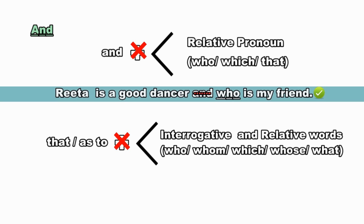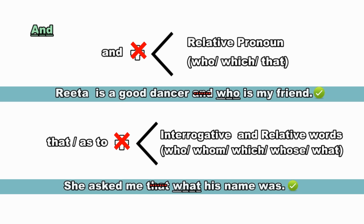Similarly, 'that', 'as', and 'to' are not used before interrogative and relative words like who, whom, which, whose, what, etc. For example: 'She asked me that what his name was' — using 'that' before the interrogative word 'what' is incorrect. The correct sentence is: 'She asked me what his name was.' This rule is also very helpful in direct-indirect narration and should be kept in mind as it is quite important.